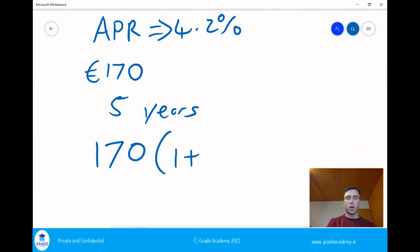So one plus i. What's 4.2% as a decimal? It's 0.042 and we're going to put this to the power of five.